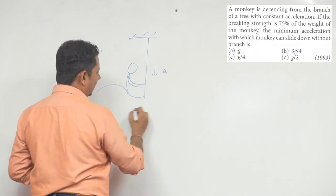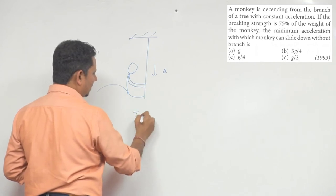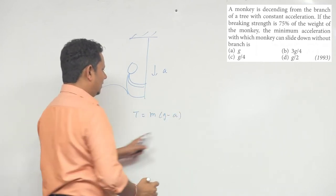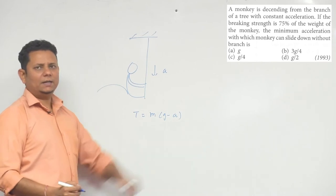If it has a net acceleration, then we will write the tension as M(G minus A). This is your tension.